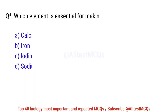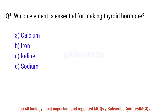Question number 4. Which element is essential for making thyroid hormone? The right option is C: Iodine.